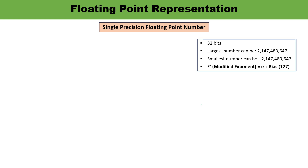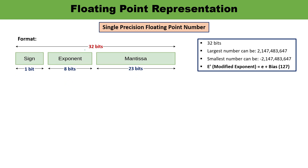Let us discuss single precision floating point numbers in detail. Since it is 32 bits, the sign S is 1 bit, the modified exponent E' is 8 bits, and the mantissa is 23 bits (totaling 32 bits). The mantissa occupies bits 0–22, the exponent bits 23–30, and the sign bit is bit 31. For a numerical example, we take a decimal number and convert it into single precision floating point representation.